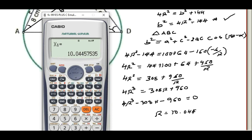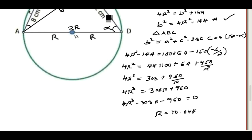The first solution gives R = 10.044, so our radius is 10.044. Thank you for watching, ladies and gentlemen — that is how to solve that kind of problem.